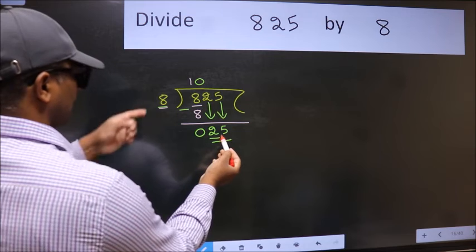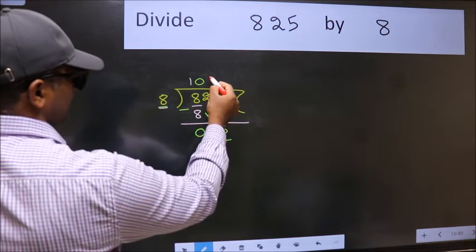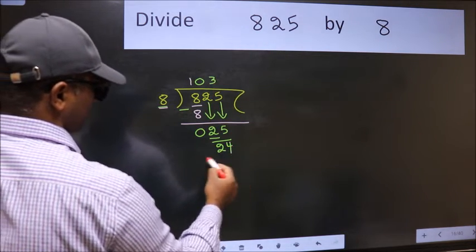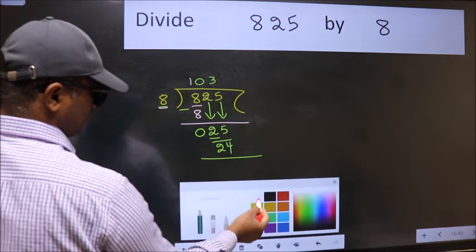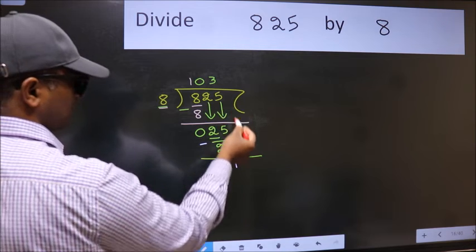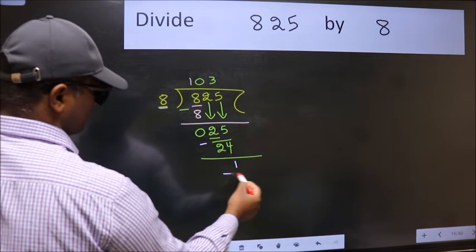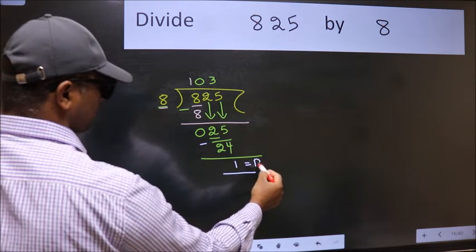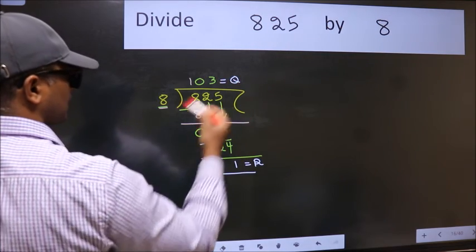A number close to 25 in the 8 table is 8 threes, 24. Now we subtract. We get 1. No more numbers to bring down, so we stop here. This is our remainder and this is our quotient.